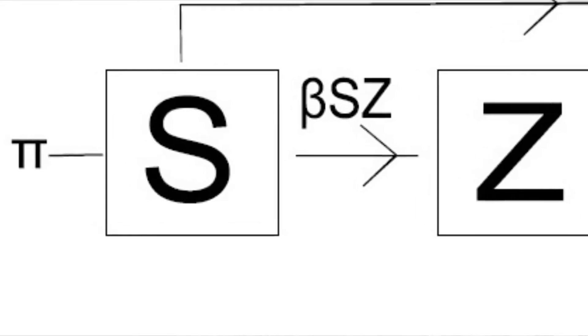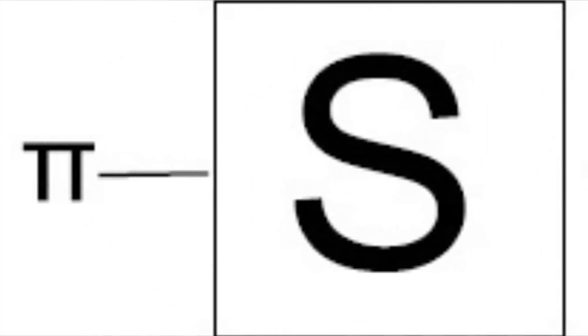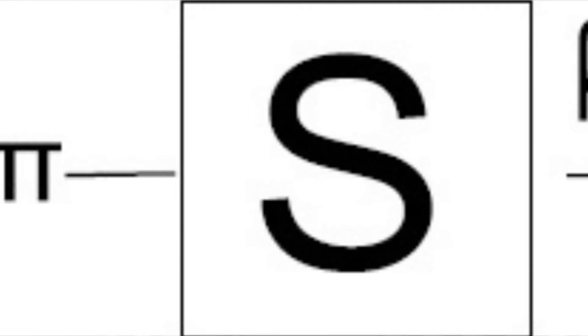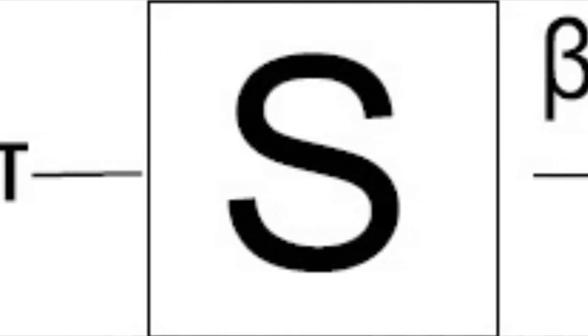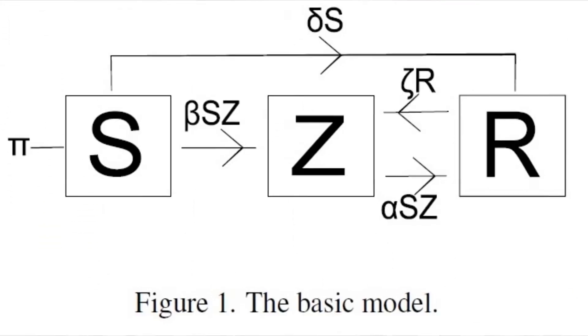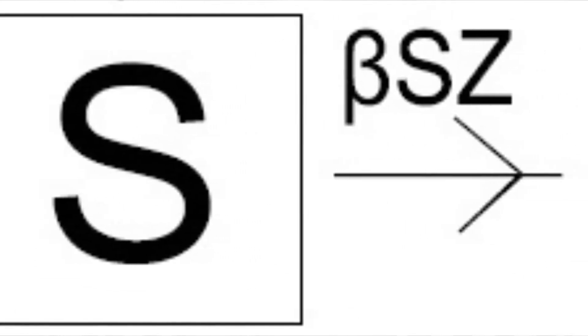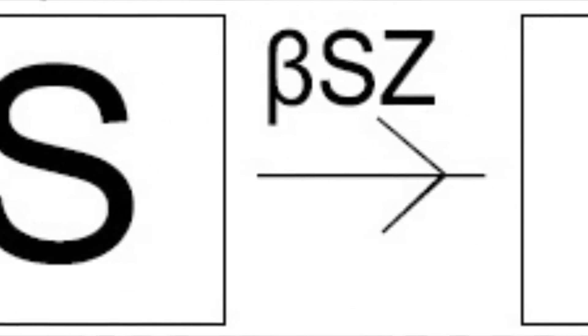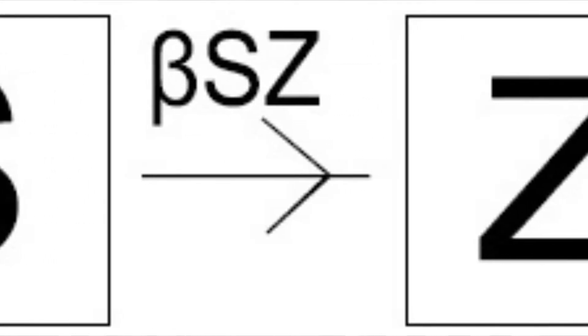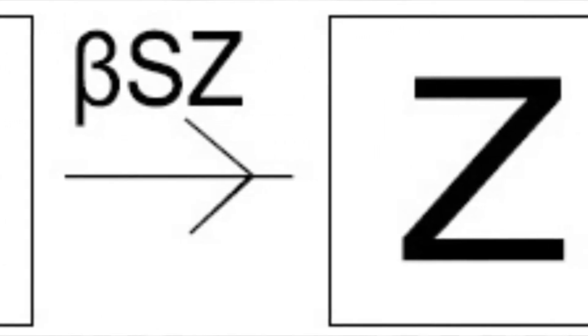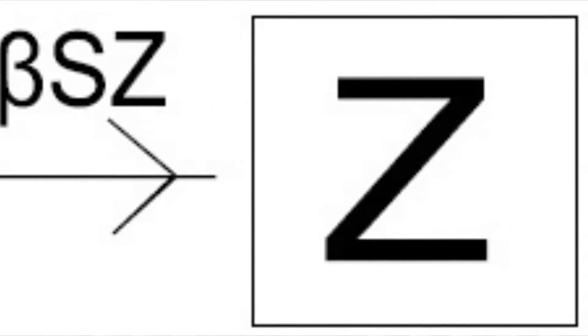In this basic model, Pi is the birth rate. S represents our susceptible people. People can die naturally into group R — those are the chronic, natural-cause deaths, parameter D. S can become Z: Menschen können zu Zombies werden, indem Zombies angreifen und den Zombie-Virus übertragen, mit einem Übertragungsparameter Beta. Beta·S·Z ist der Zombie-Film-Klassiker — Zombie greift Menschen an, Mensch wird zu Zombie.